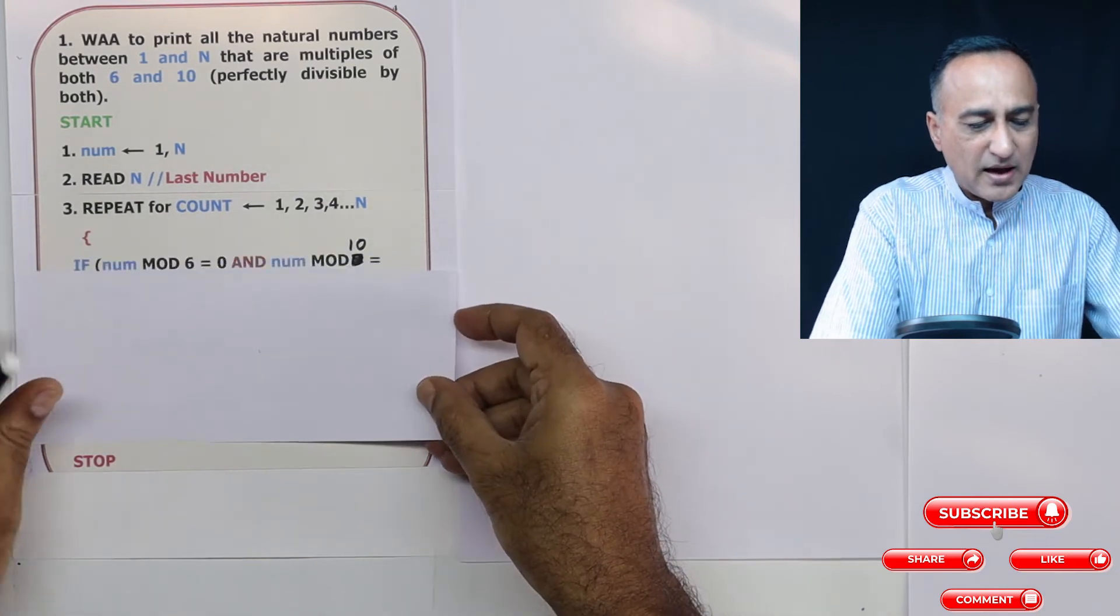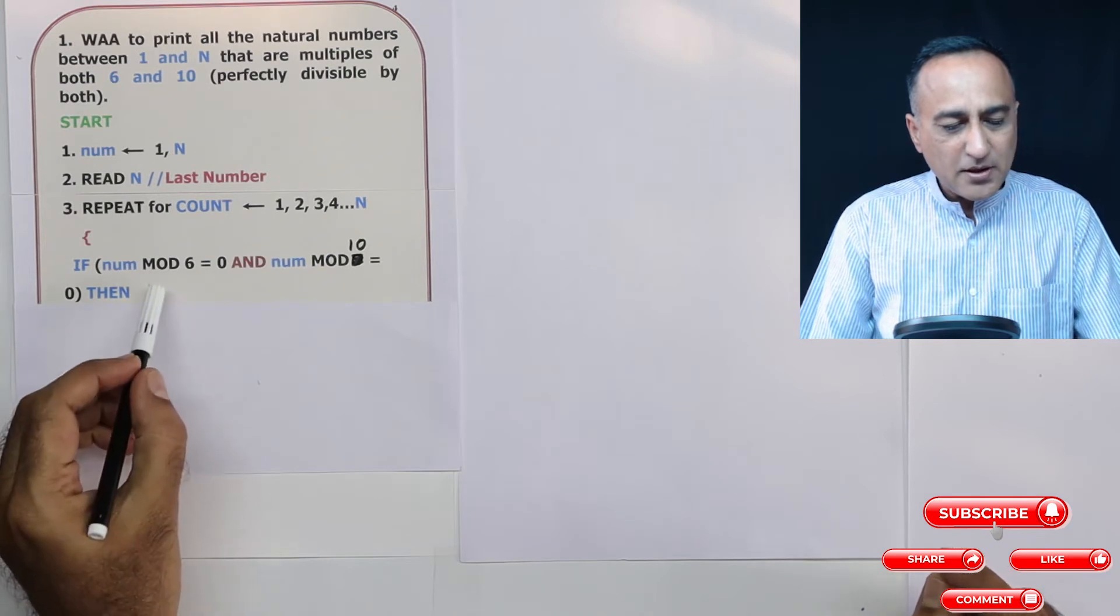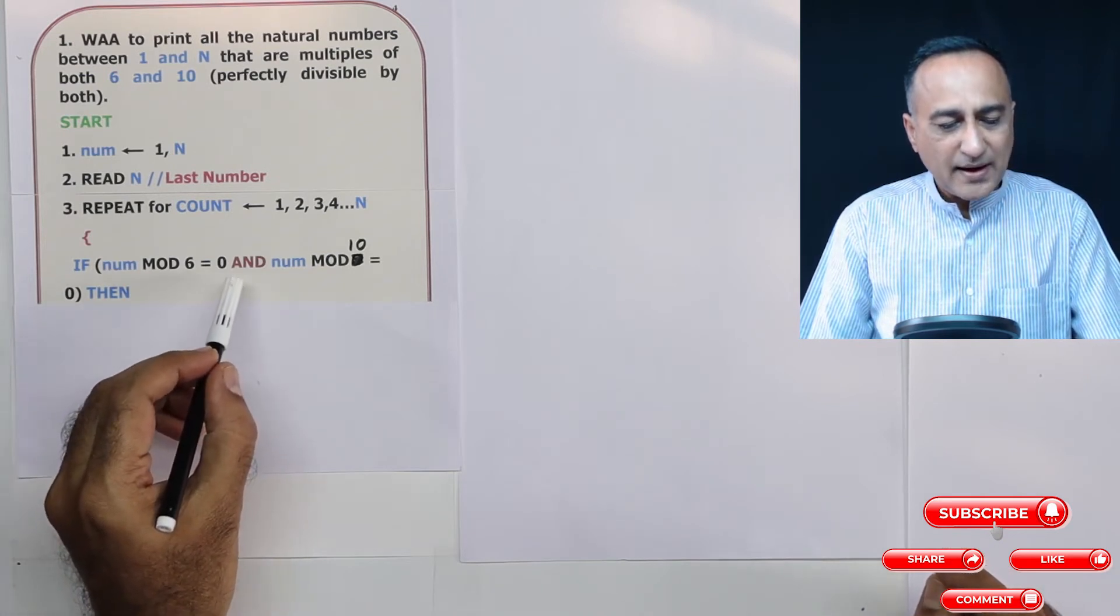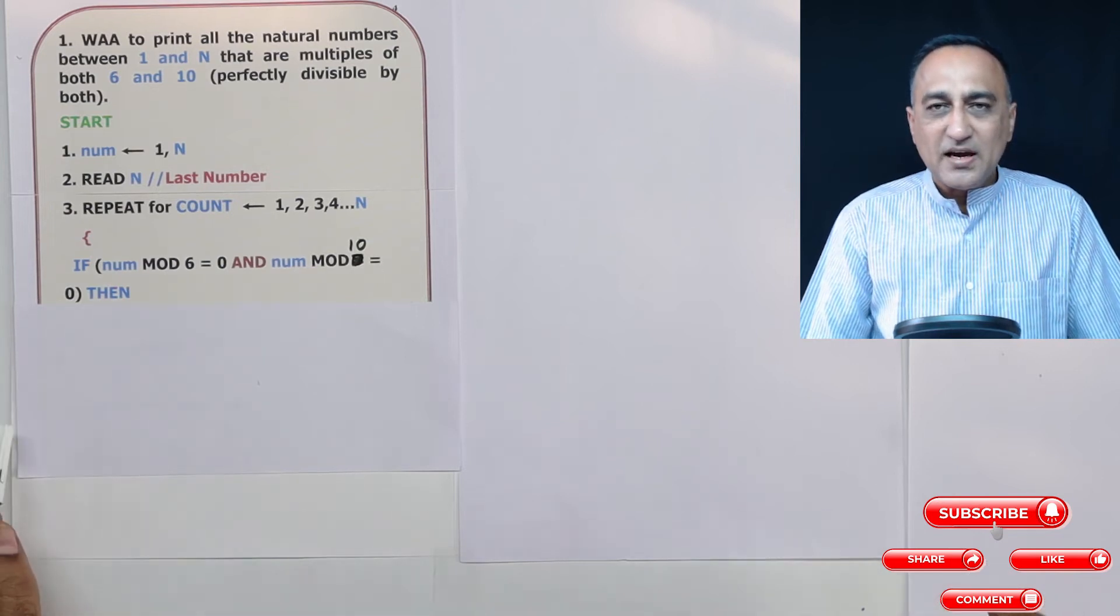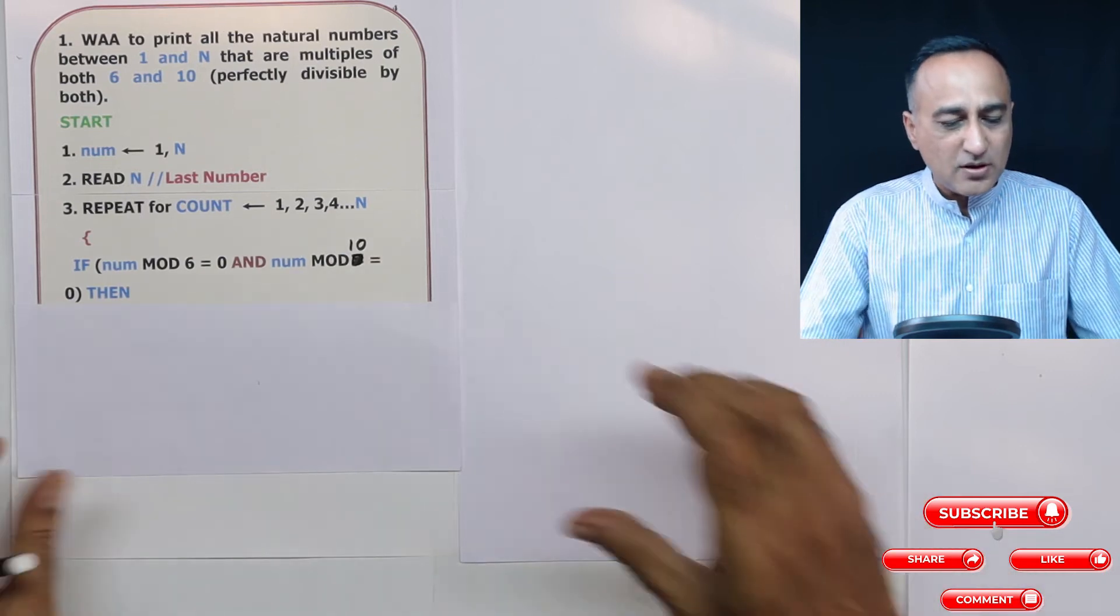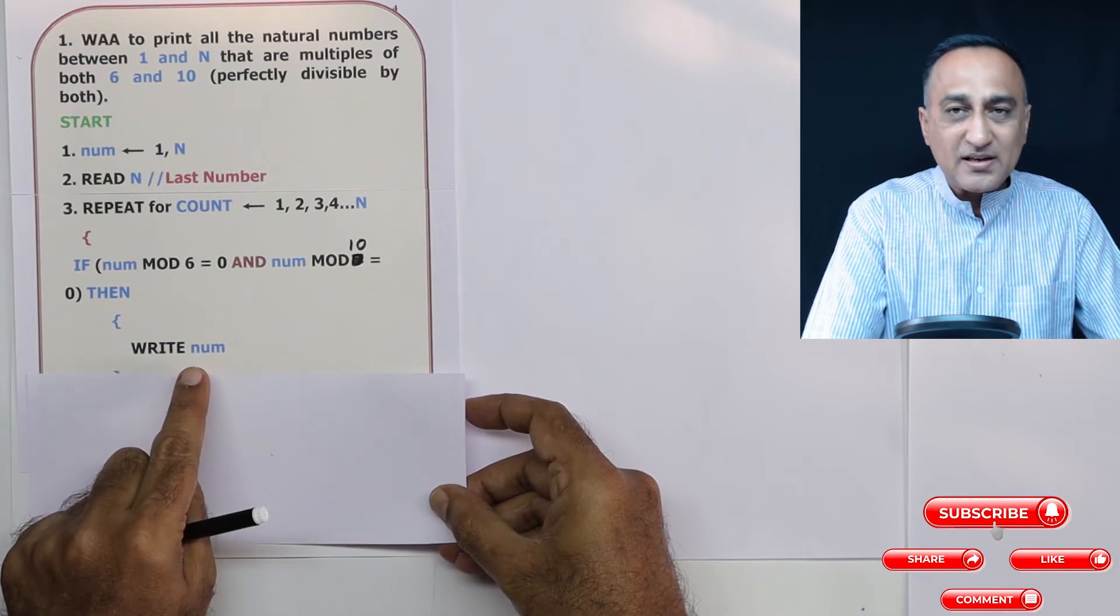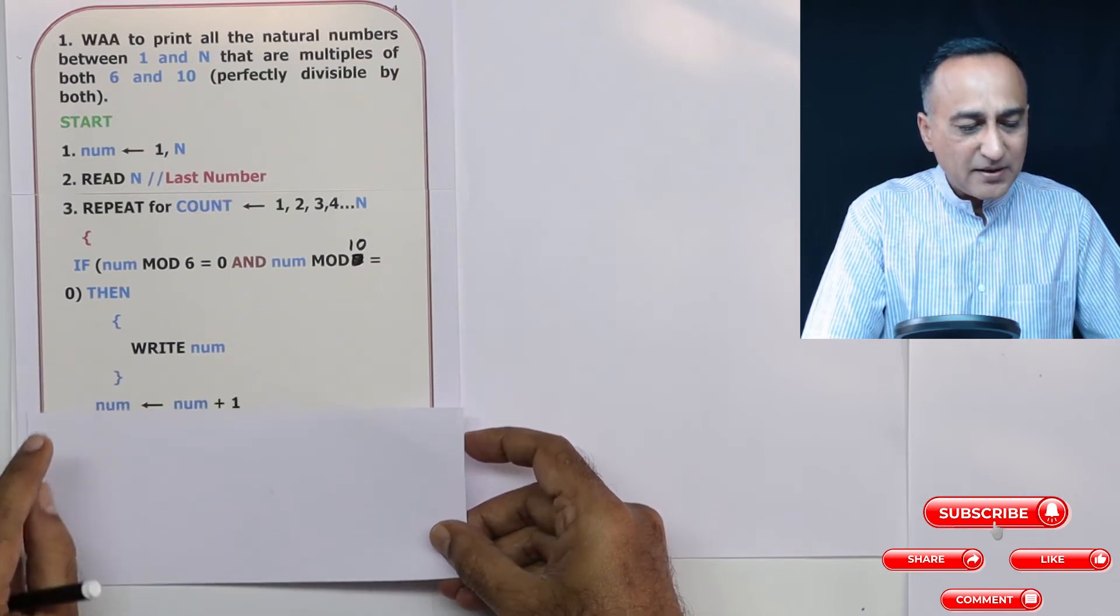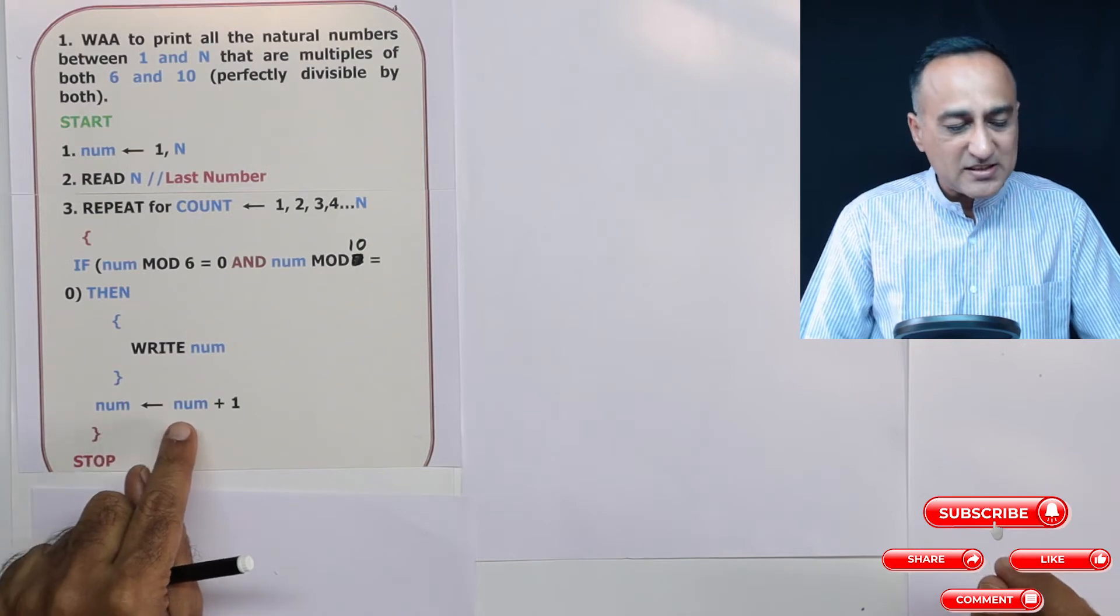The next step is I'm going to check if number mod 6 is equal to zero and number mod 10 is equal to zero. That means after dividing the number by 6 and by 10, if the remainder is zero, then I'm going to print that number on the screen. After I print the number, in order to go to the next number, I'll increase number by one.